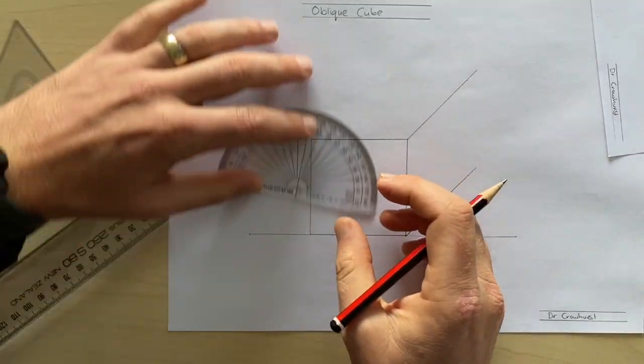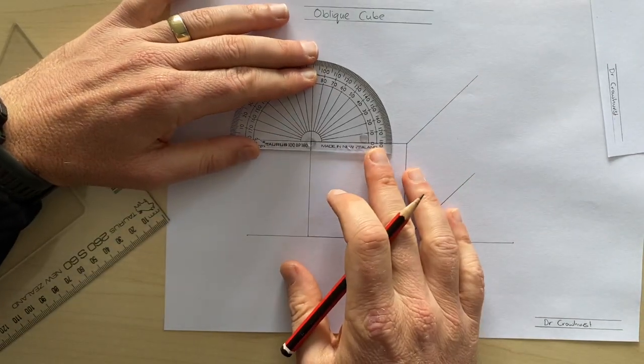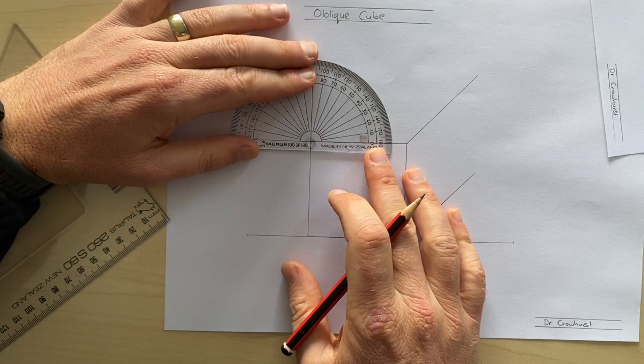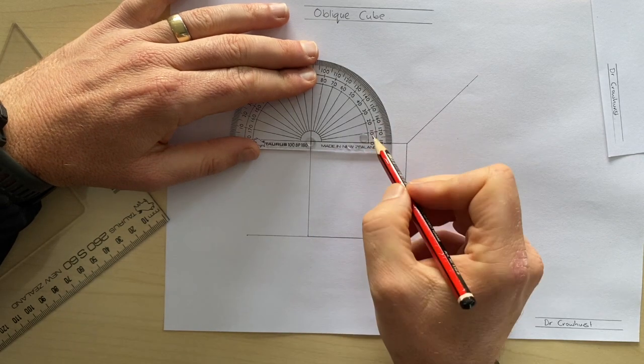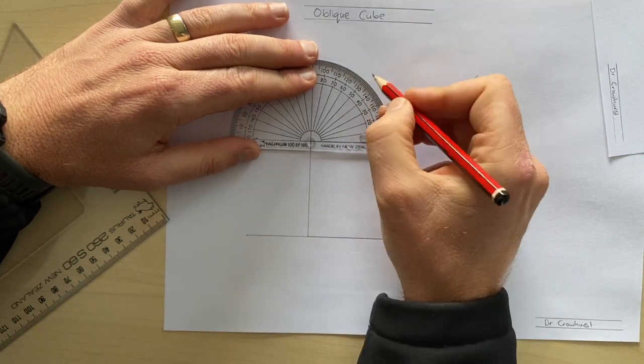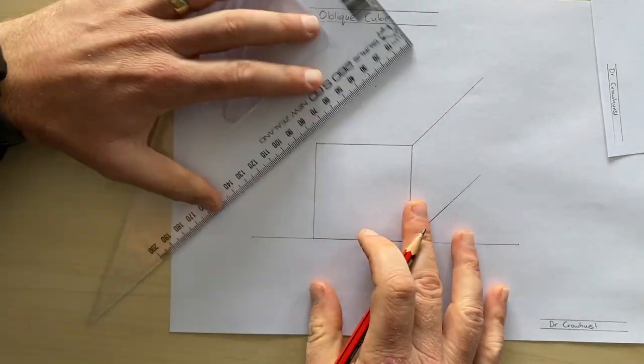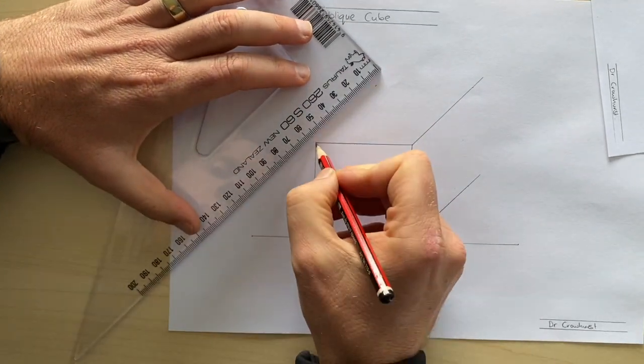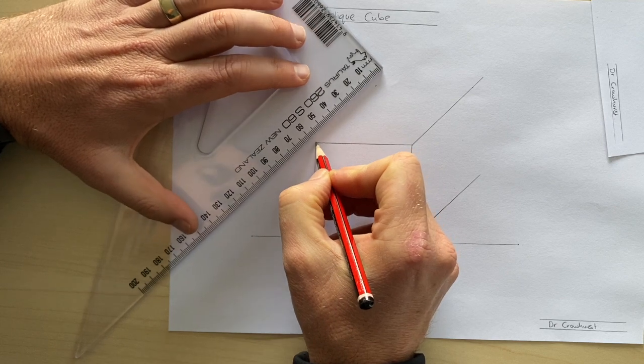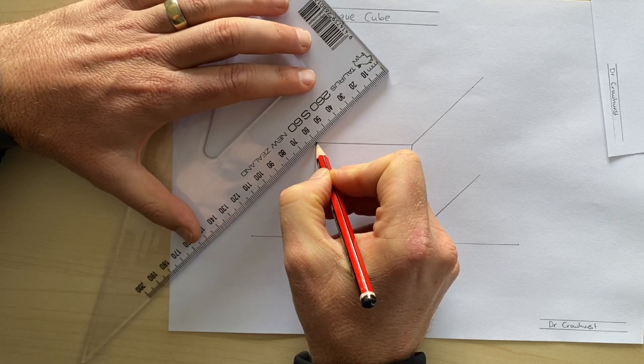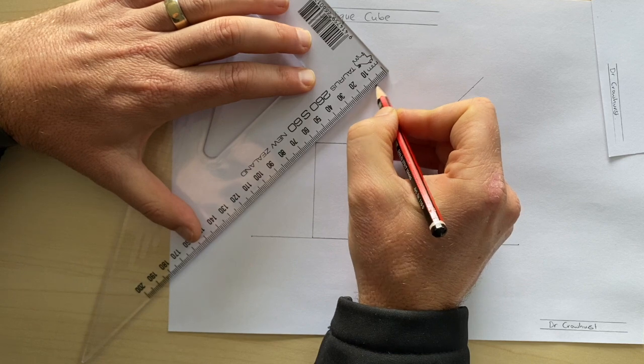And then same again: 10, 20, 30, 45, mark it. Put my pencil on like that, six centimeters or 60 millimeters, go down, go to the other end.